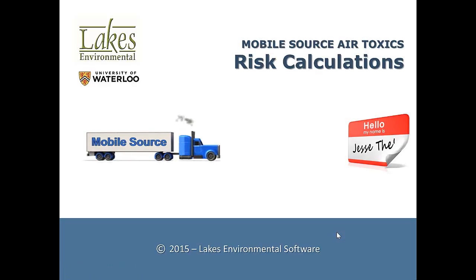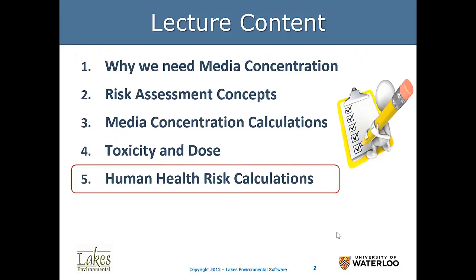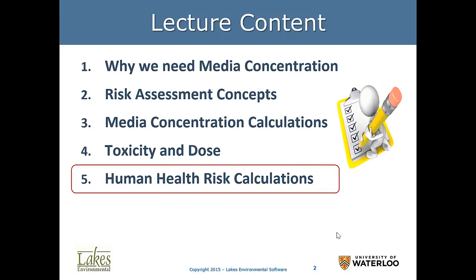This is the fifth segment of the fifth lecture in the course, Mobile Source Air Toxics. We're going to cover risk calculations — these are human health risk calculations. I will simplify and explain in a nutshell what we need to do to compute human health risks. We'll have cancer and non-cancer risks.